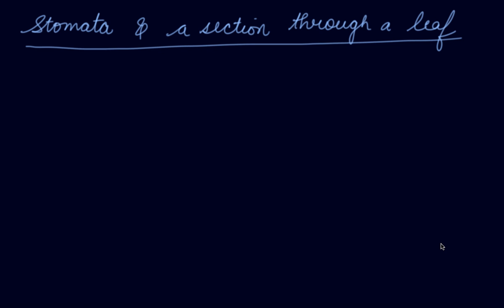In this video, we will be studying about the stomata and the section through a leaf. We all know that plants make their own food. They are the producers. The process through which plants make their own food is known as photosynthesis.